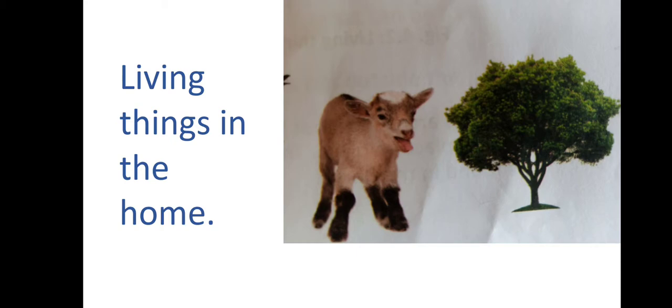Both of these are living things because they can breathe. They have life in them. A dog and an insect — they are living things. Fish is also a living thing. You can see the other picture: a tree and a flower. These are also living things.